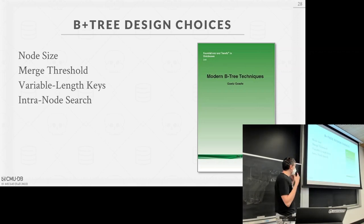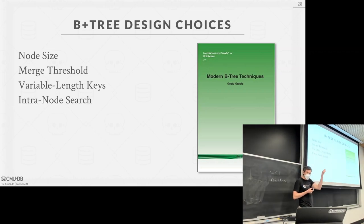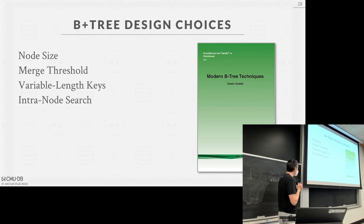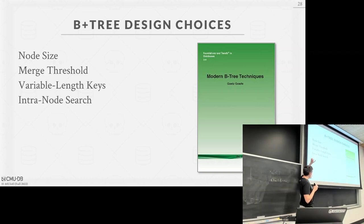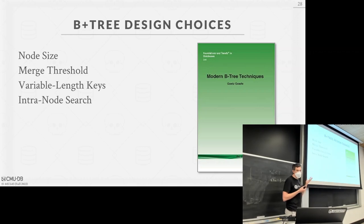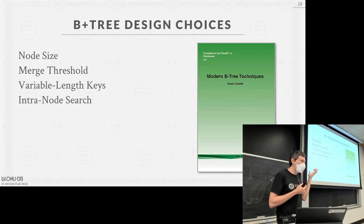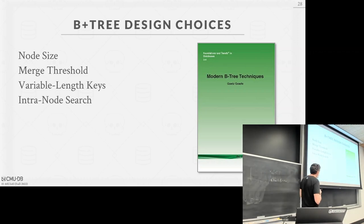There are a bunch of other design decisions we have to make beyond just things like taking from the left or right. There are different policies for how we organize data, when we split, when we merge, and so forth. There's a great book called 'Modern B-Tree Techniques' by Goetz Graefe, from around 2010, which is basically the Bible of B+ trees. If you Google the name with PDF it'll show up, or the library has it.